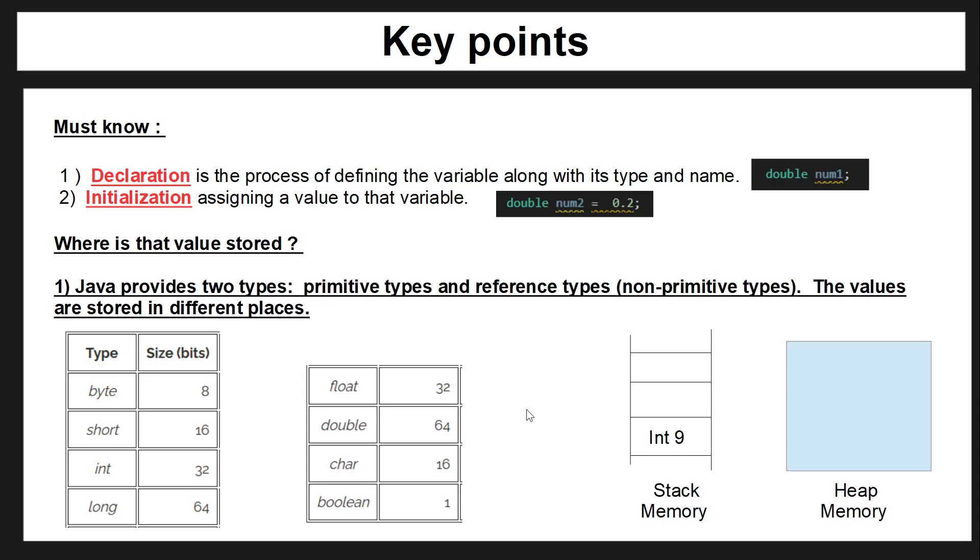In Java, you also have another memory section and this is heap memory and reference types will be stored in heap memory. We're going to talk a little bit more about reference types but it's important to understand these three key points.